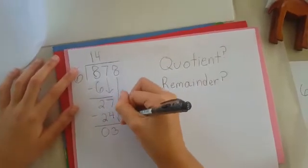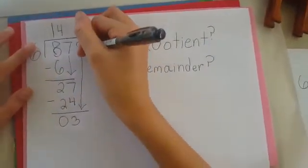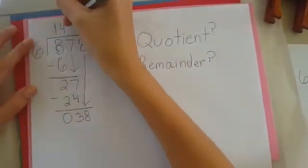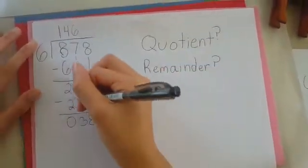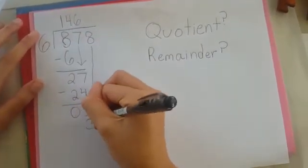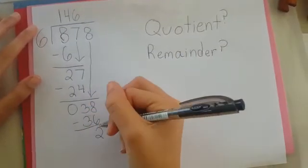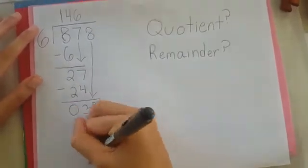So let's bring down the eight. The eight is the last number. So that would be 38. Six times six is the nearest number to 48. So it would be 36. Eight minus six is two. Zero. And that would be all.